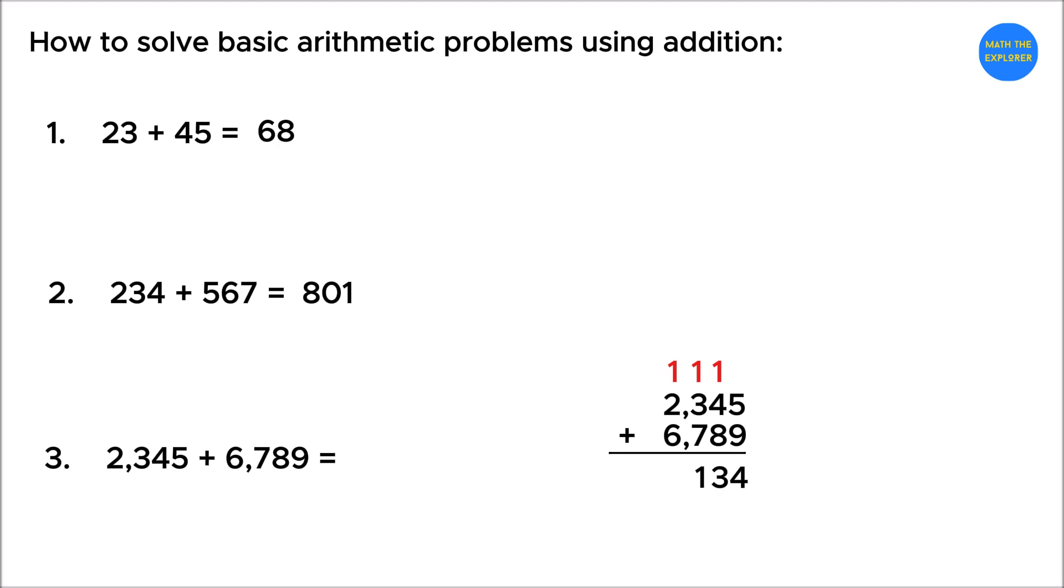Now add the thousands place. 2 plus 6 is equal to 8, plus 1 gives 9. Putting all the digits together, the final answer is 9,134.